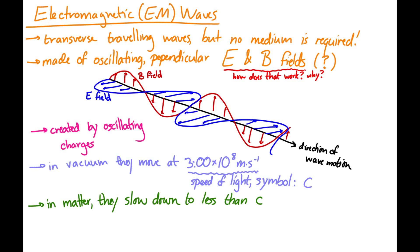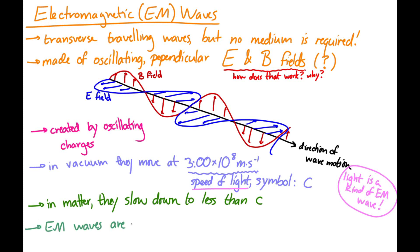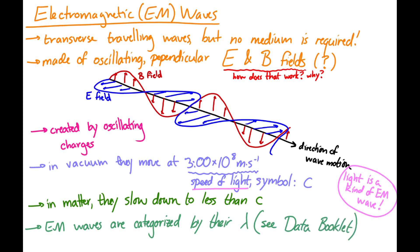Light is an electromagnetic wave — that's why all electromagnetic waves travel at the speed of light in vacuum. Electromagnetic waves are categorized by their wavelength, and there's a diagram of the electromagnetic spectrum in your data booklet. Just keep in mind: electromagnetic waves are categorized by their wavelength.